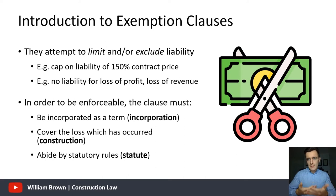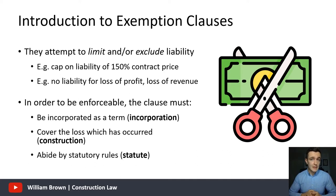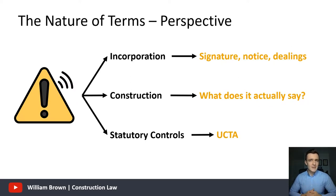Assuming the exemption clause is part of the contract, you then have to consider: has it been constructed correctly? Has the drafter actually covered the loss the party is seeking to limit or exclude? We will look at how you interpret the provisions of an exemption clause when we consider construction. And then lastly, it has to abide by the statutory rules — there are certain types of losses you simply cannot limit or exclude, such as liability for death or personal injury caused by your own negligence. We'll look at the Unfair Contract Terms Act and the reasonableness test.